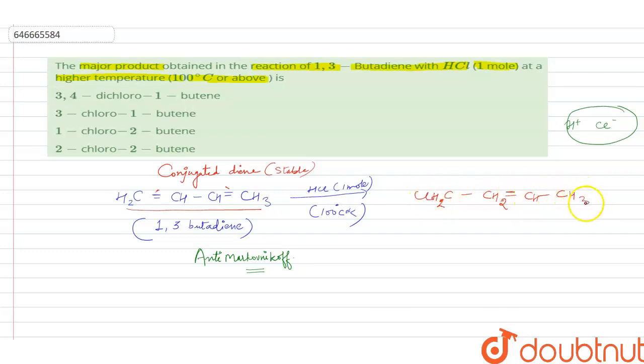When we complete the valencies, our product formed will be 1-chlorobut-2-ene.